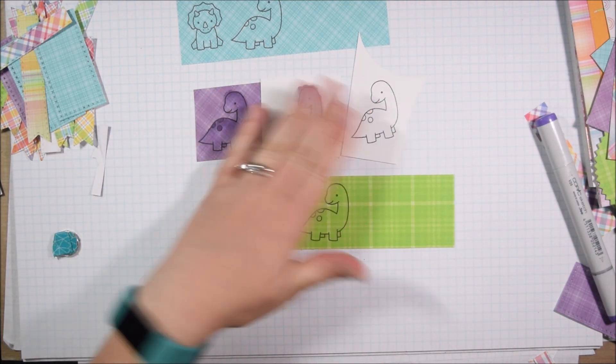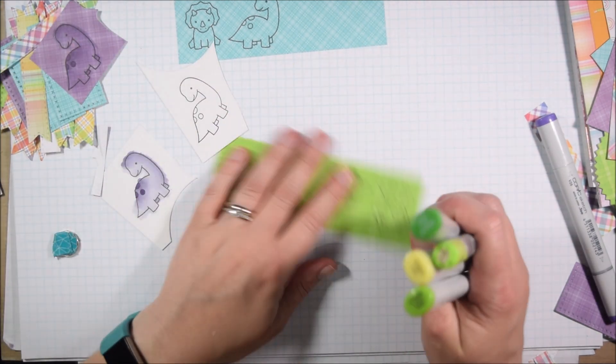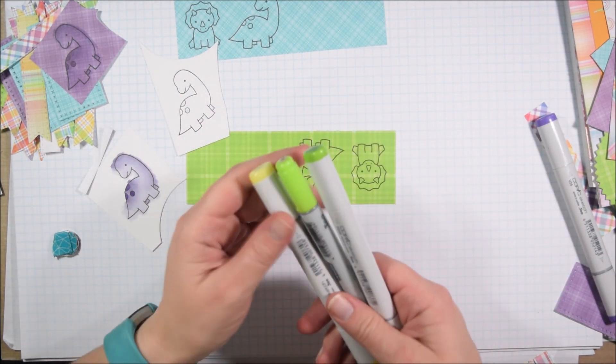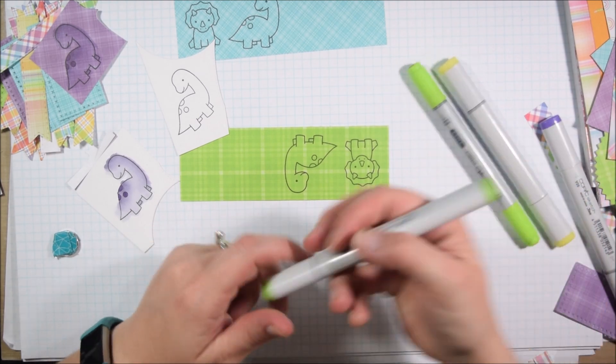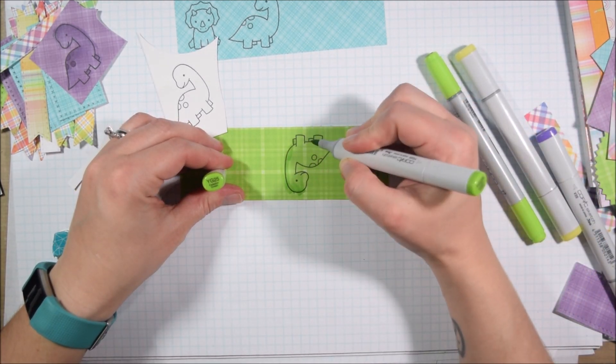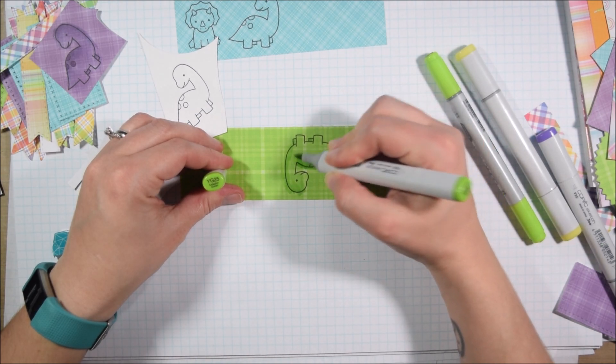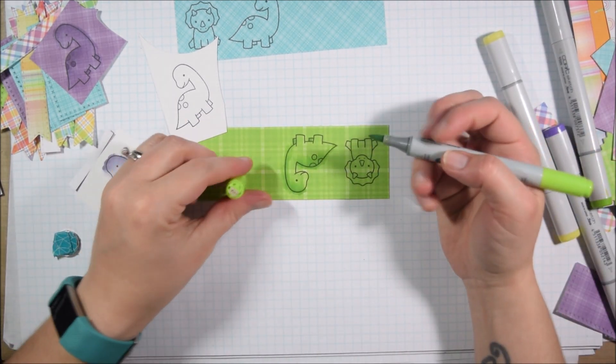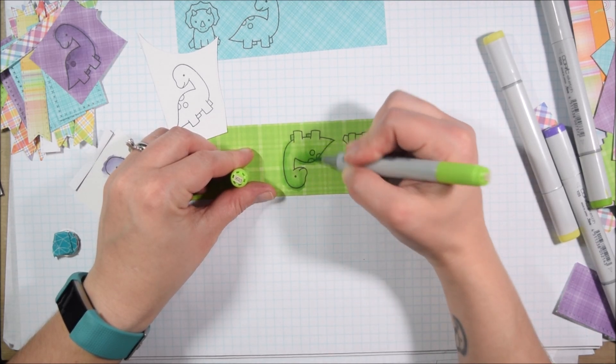I actually decided to show you Copic coloring on the pattern paper versus on plain cardstock. The thought behind this was I wanted to use the pattern paper because you can color a little bit faster since the pattern paper kind of covers up any mistakes or any blending that isn't so smooth, so you don't have to take as much time.